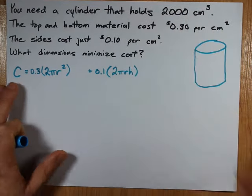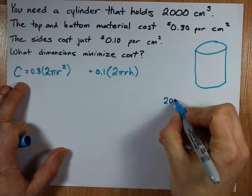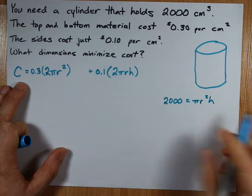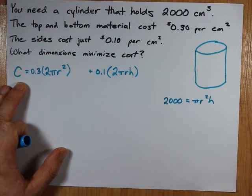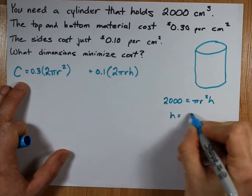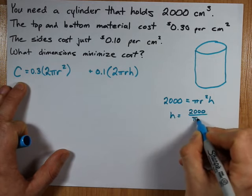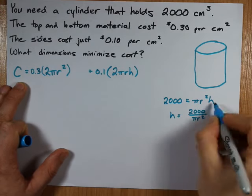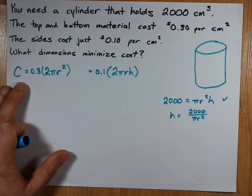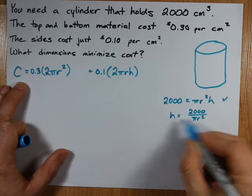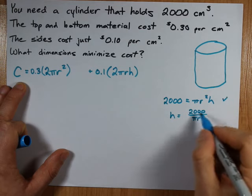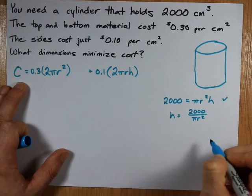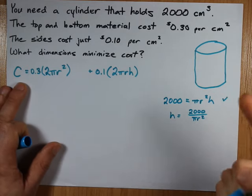That's where the given volume comes in. The volume of a cylinder is pi r squared h, that's area of the base, times the height. Which means that h is 2,000 over pi r squared. Let me emphasize what I'm doing here. I'm creating an equation that I know is true based on the given information. And then I'm using that to isolate for one of the letters. I could have isolated for r here. This would have been r equals the square root of 2,000 divided by pi h. But I didn't because I don't want to deal with square roots right now.